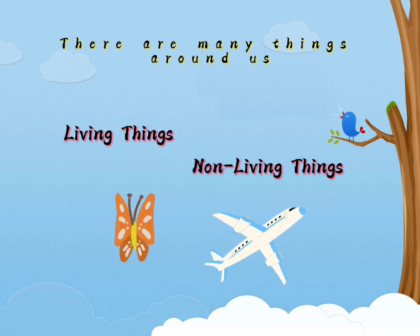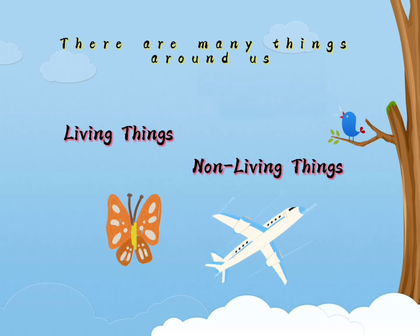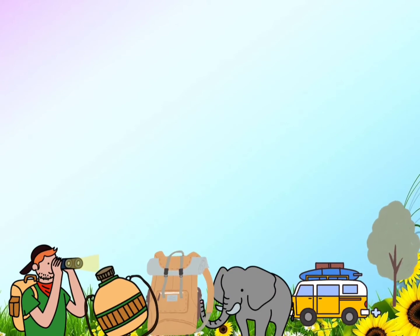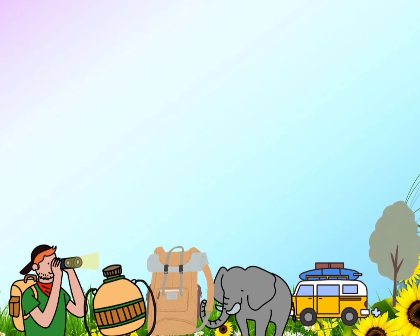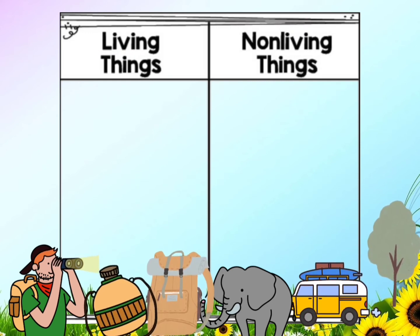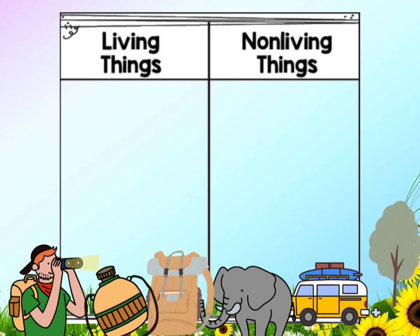Today we are going to learn how to classify living things and non-living things in a table. Now, name the things that you can see in front of you: a man, a water bottle, a backpack, an elephant, a van, and a tree. We are going to classify them into living things and non-living things in different groups.